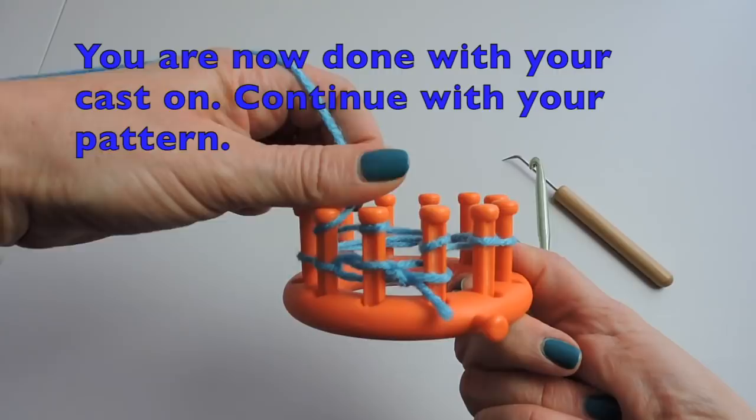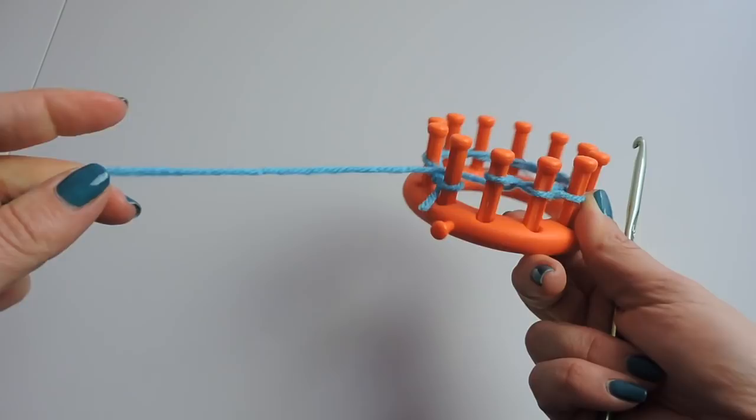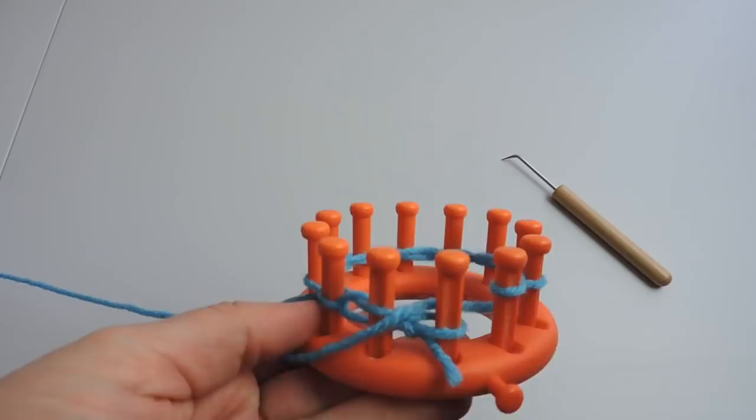After this is when you'll continue your pattern, so this is just an example. If you had an e-wrap stitch, you would just continue with the e-wrap stitch. Whatever stitch your pattern calls for, this is the unit stitch, you would just continue with that stitch and that's it.